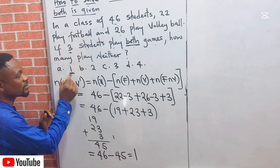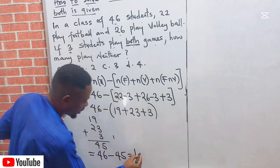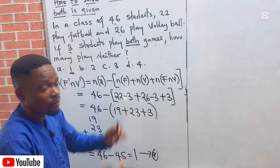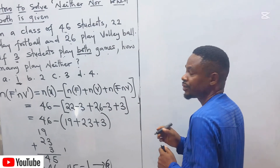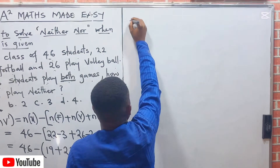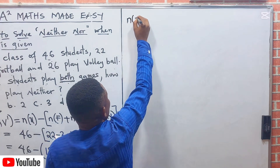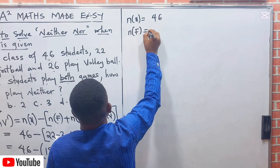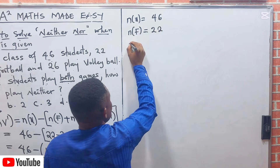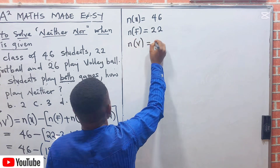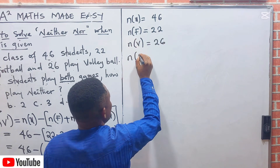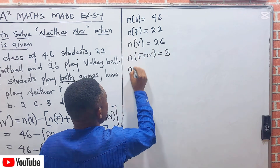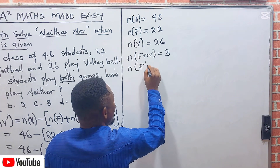The answer is 1. The correct answer is one. Now I want you to observe an alternative method. Let us bring up the information again: the universal set is 46, football is 22, volleyball is 26, and both football and volleyball is 3.